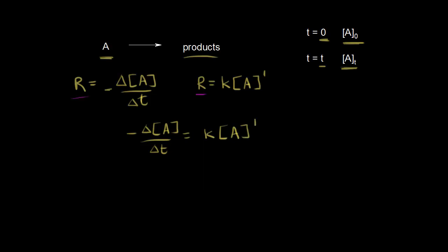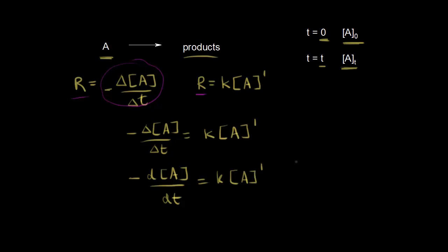This is the average rate of reaction on the left. If we wanted to write this as the instantaneous rate, we need to think about calculus. The instantaneous rate would be negative dA/dt, the negative rate of change of A with respect to time, and this is equal to K times A to the first power. Now we have a differential equation, and when you solve a differential equation, you eventually get a function — the concentration as a function of time.